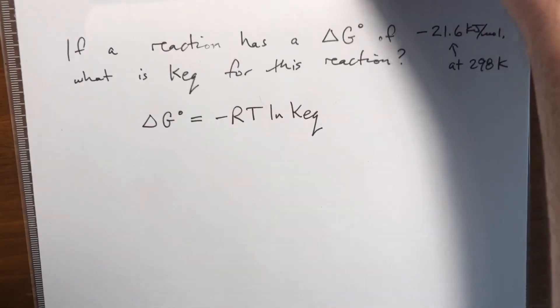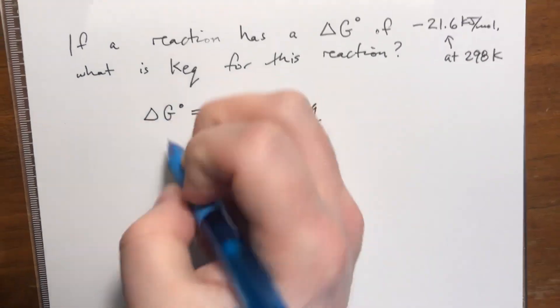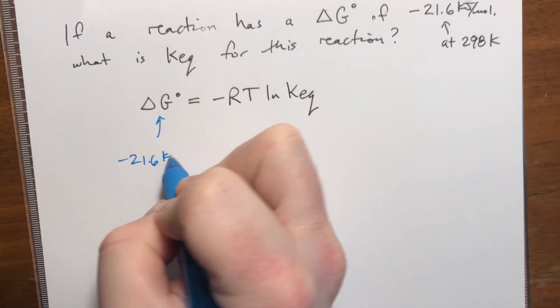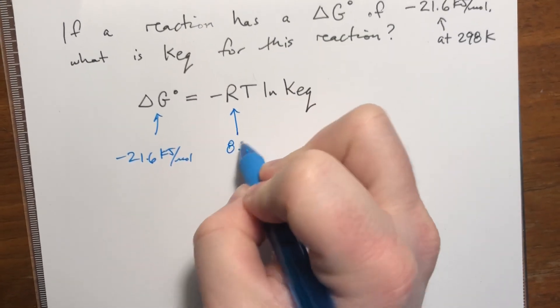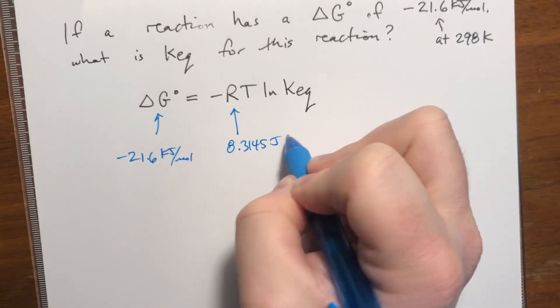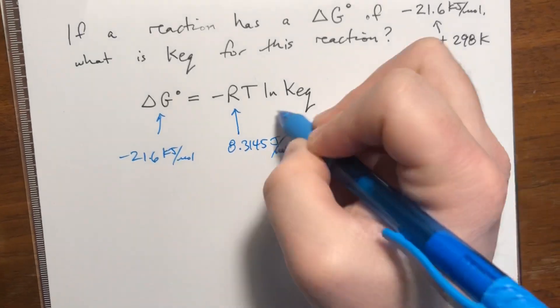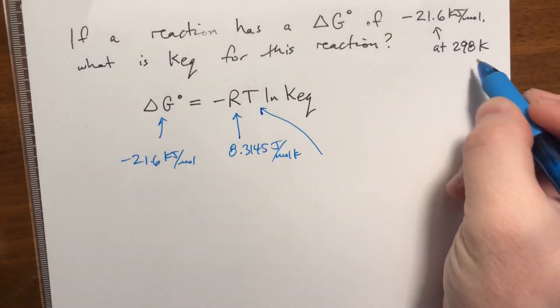R, I'll show my work here, this is negative 21.6 kilojoules per mole. R is 8.3145 joules per mole Kelvin. The temperature is 298.